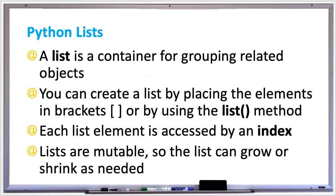In Python, a list is a container for grouping related objects. You can create a list by placing the elements in brackets or by using the list method. Each list element is accessed by an index, and lists are also mutable, so the list can grow or shrink as needed. Let's take a look at an example of some lists in Python.